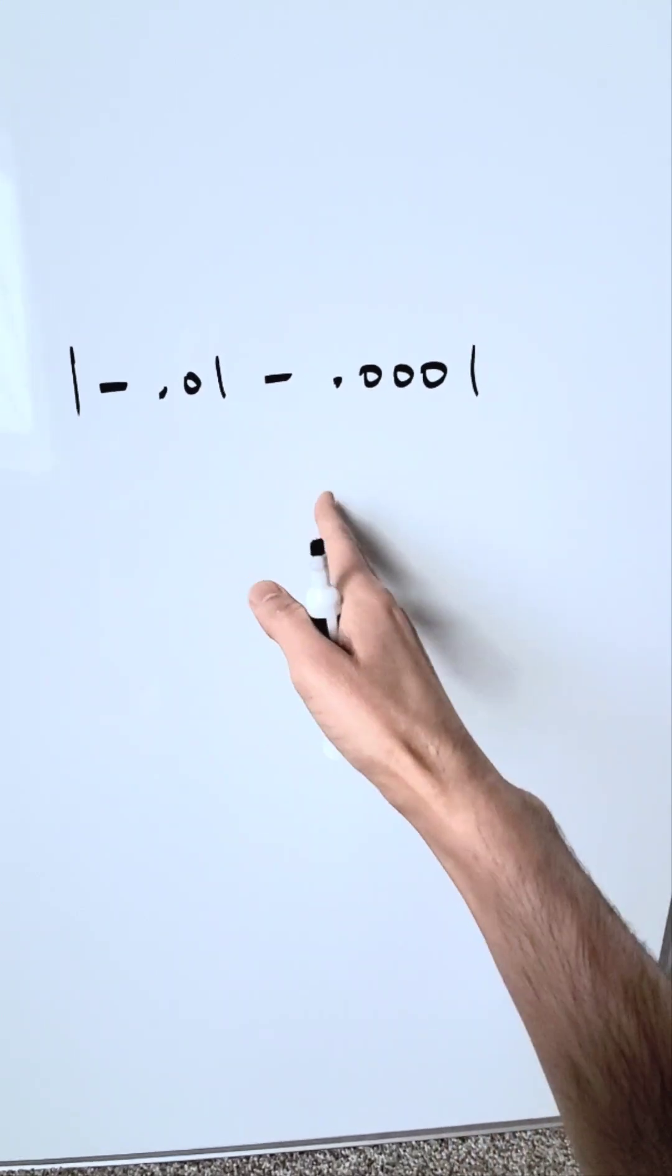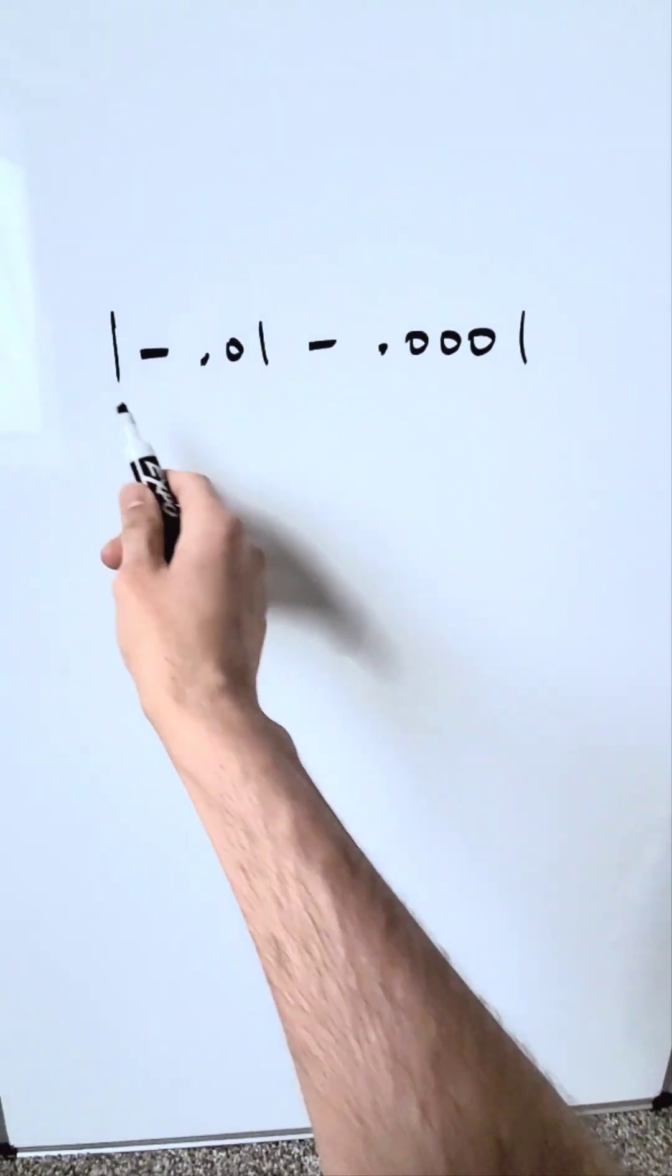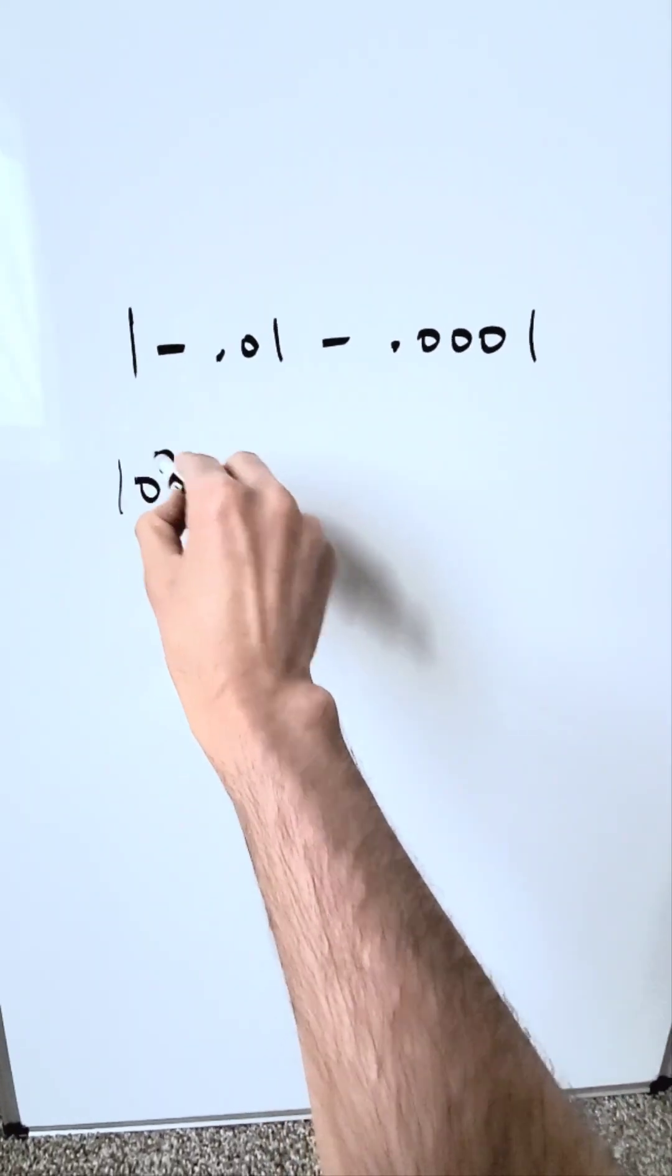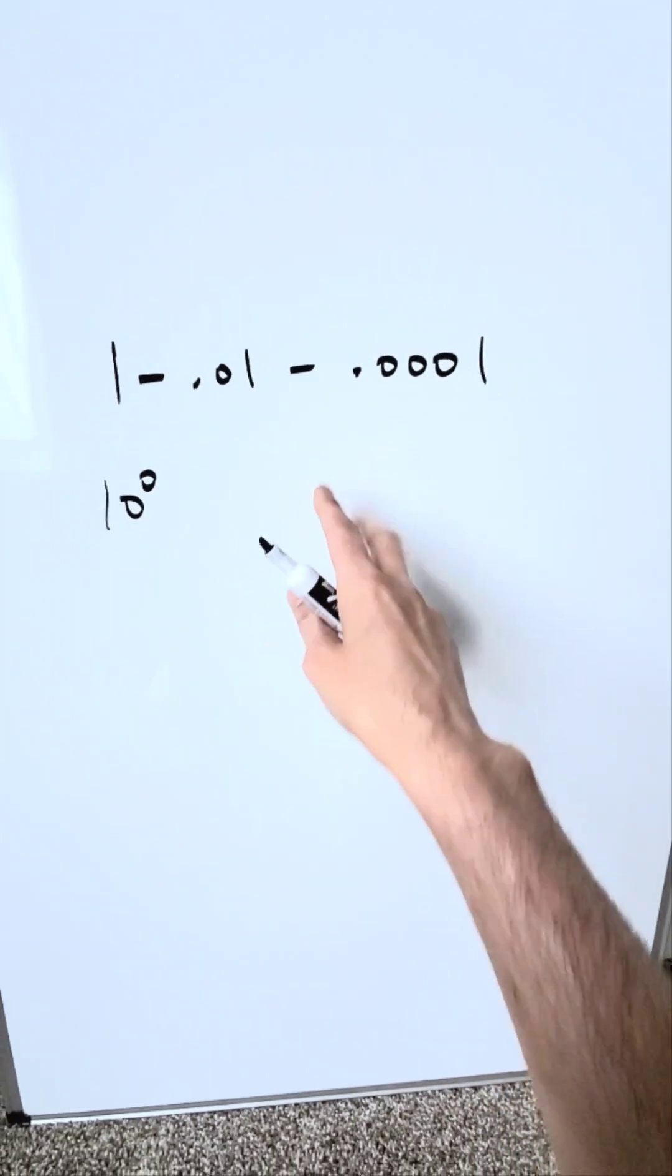You can do this the long way, worrying about decimal places and all of that. Sometimes it can be tricky for the student. 1, I know, is 10 to the power of 0. And this right here is your trick. We're going to do this using laws of exponents.